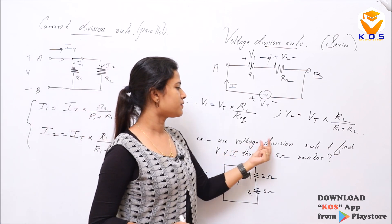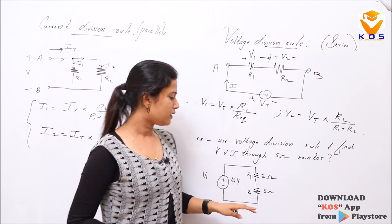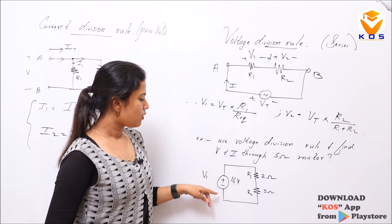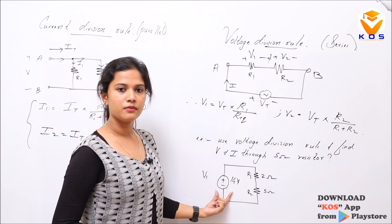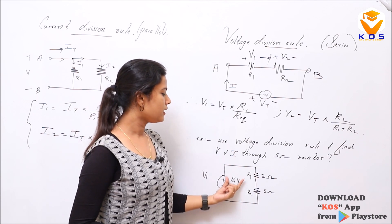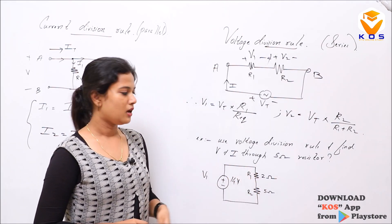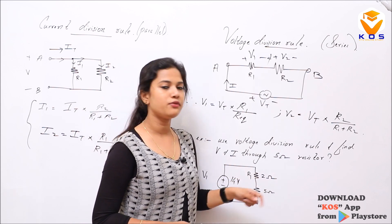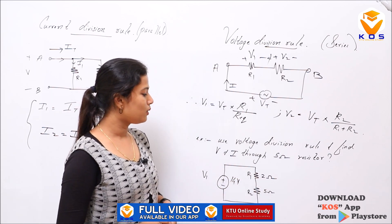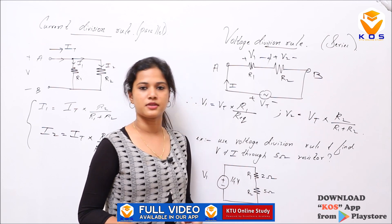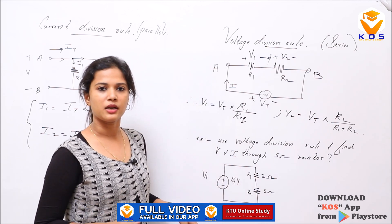Example: Use the voltage division rule to find the voltage and current through the 5-ohm resistor. We have a source voltage of 14V, with R1 equal to 2 ohms and R2 equal to 5 ohms. Find the voltage and current at the 5-ohm resistor.